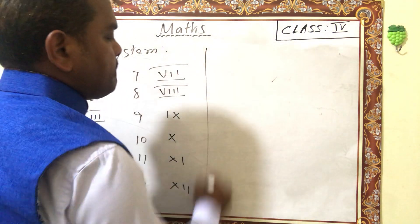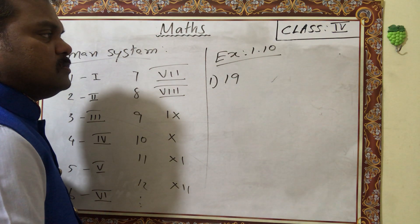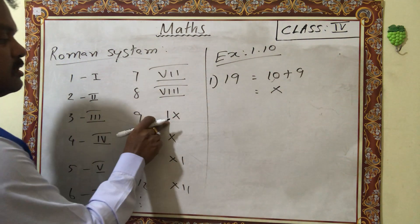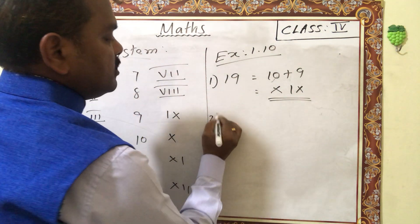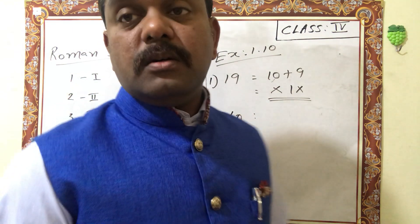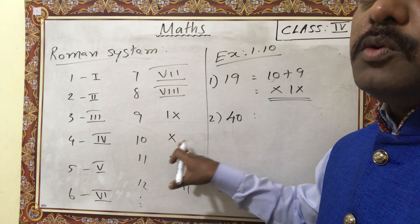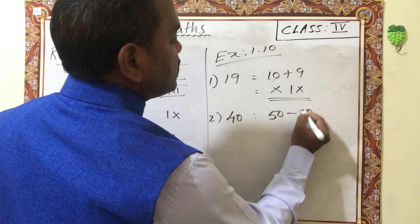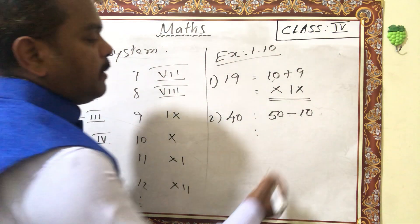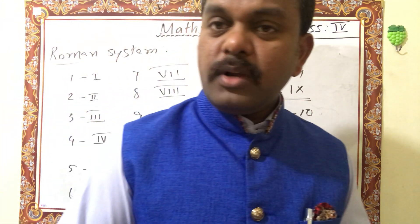Exercise 1.10: write 19 in Roman numerals. 19 equals 10 plus 9. Ten is X, and 9 is IX. So 19 is XIX. Second question: write 40 in Roman numerals. You should not write X more than 3 times, so you can only go up to 30 with X's. For 40, use 50 minus 10. The letter for 50 is L, and 10 is X written on the left, so 40 is XL.